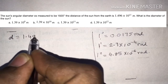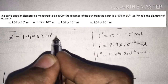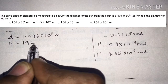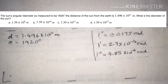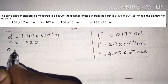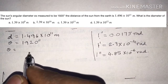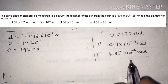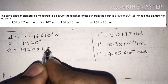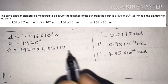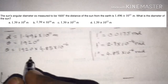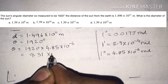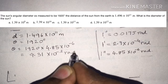The given data: distance d equals 1.496 into 10 power 11 meters; angle theta equals 1920 seconds. Converting theta to radians: 1920 multiplied by 4.85 into 10 power minus 6 radians gives a value of 9.31 into 10 power minus 3 radians.